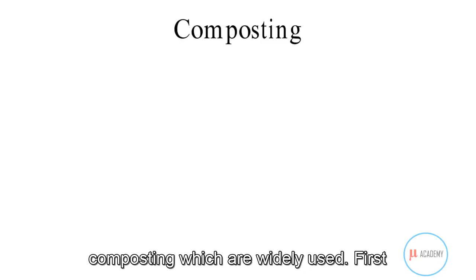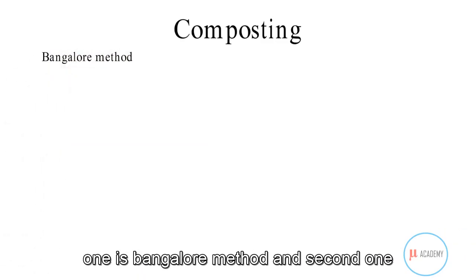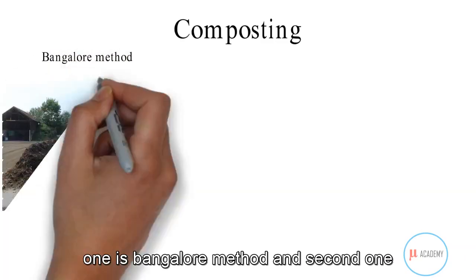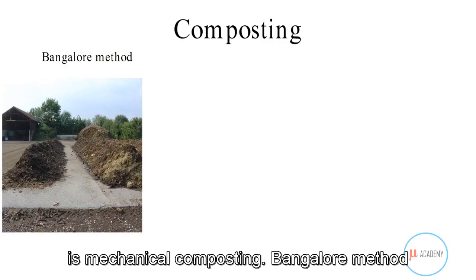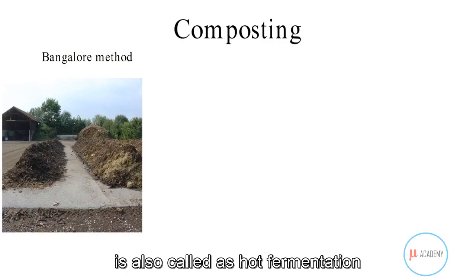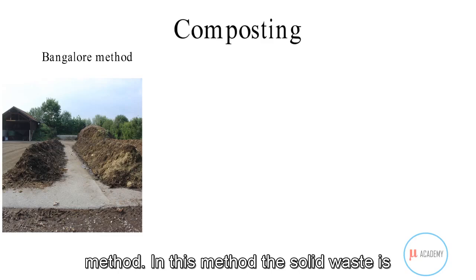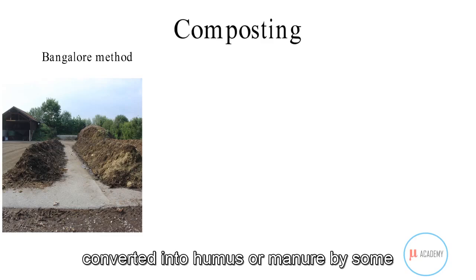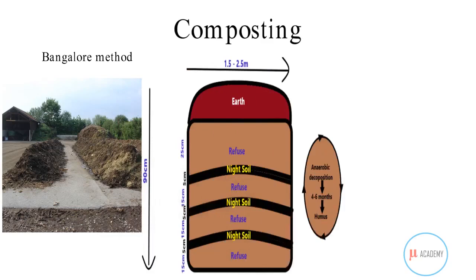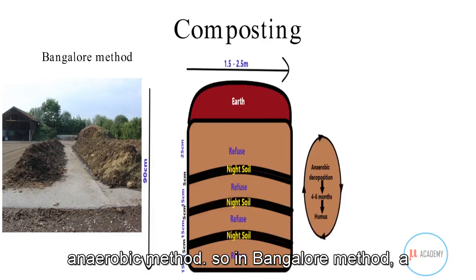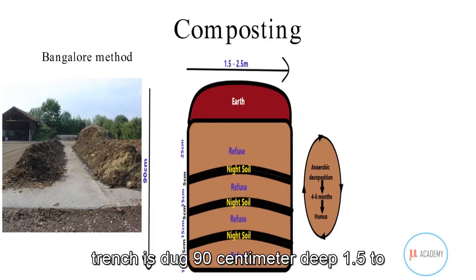There are two composting methods widely used: the Bangalore method and mechanical composting. The Bangalore method, also called the hot fermentation method, converts solid waste into humus or manure through an anaerobic process. In this method, a trench is dug 90 cm deep.